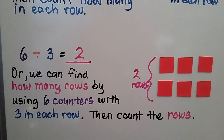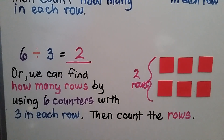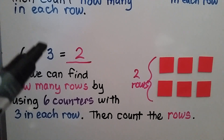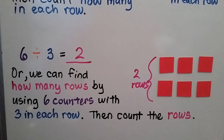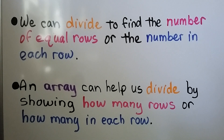We can also look at it as needing to find how many rows there are. We use 6 counters and put 3 in each group. We end up with 2 groups, 2 rows, and we count the rows. We can divide to find the number of equal rows or the number in each row. An array can help us divide by showing how many rows or how many in each row.